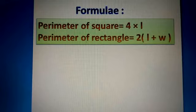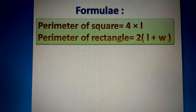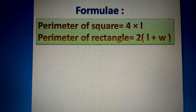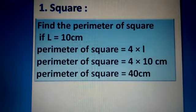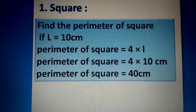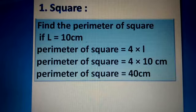Now here is a question showing how we can apply the formula. Find the perimeter of a square if l is equal to 10 centimeters. Here l stands for length. The given length of the square is 10 centimeters. To solve this, we have to follow some steps.